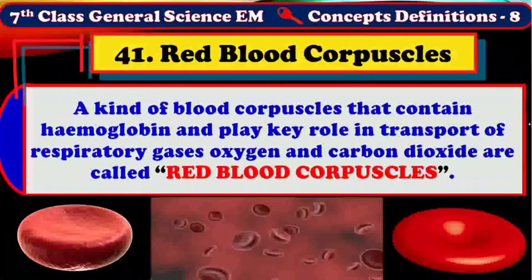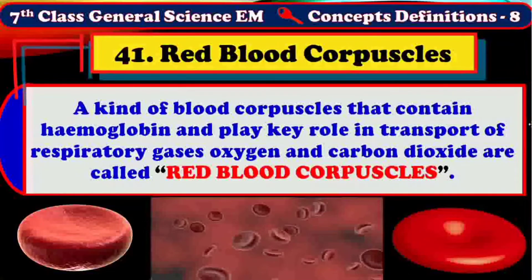RBC exist in a biconcave shape and are the highest in number among all kinds of blood corpuscles. In healthy adult human beings, around 5 million RBC are present in 1 cubic centimeter of blood. In human beings, the lifespan of RBC is around 120 days.